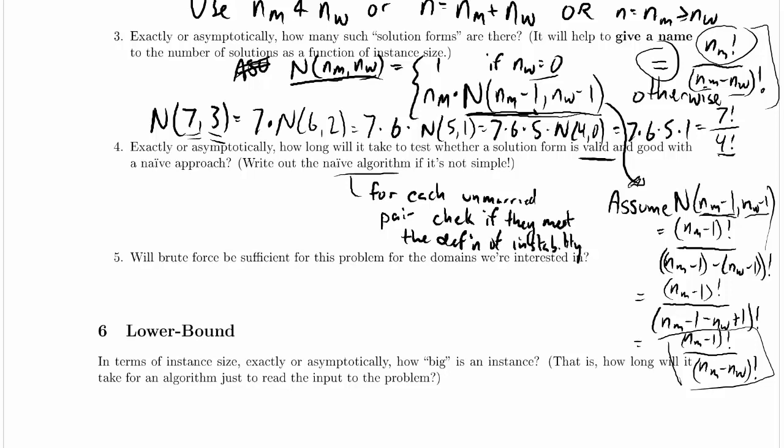That's the core of any algorithm we would make. And the definition of instability requires that we have the unmarried pair and their partners, or in the case of an unpaired man, the fact that that man is unpaired. With the right data structures, we can probably make that take constant time to find those partners.